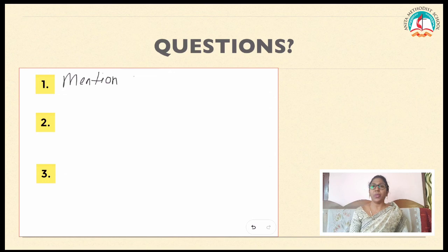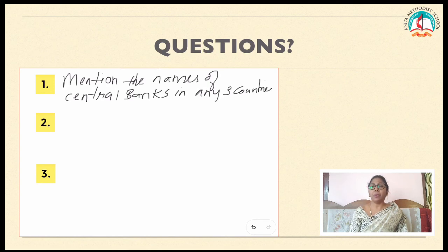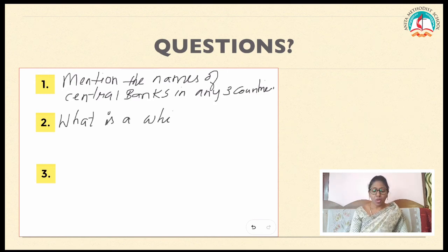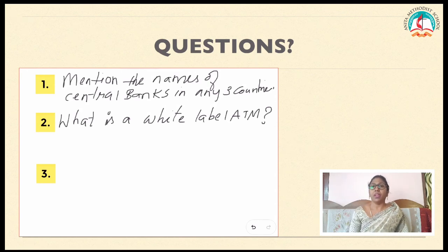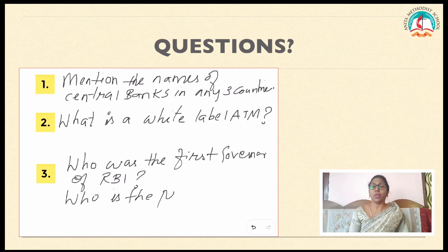Children, here are a few questions for you to answer. As you know, the central bank of India is the RBI. So, mention the names of central banks in any other three countries. The next question is: what is a white label ATM? And one more question: who was the first governor of RBI India, and who is the present governor of RBI India? Answer these questions and then you can continue watching the video.